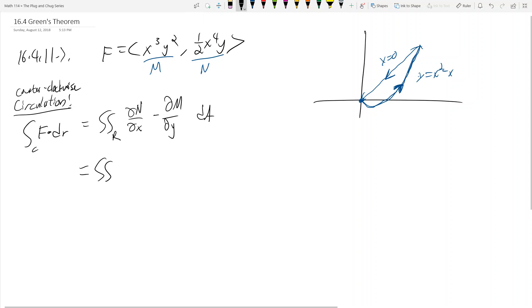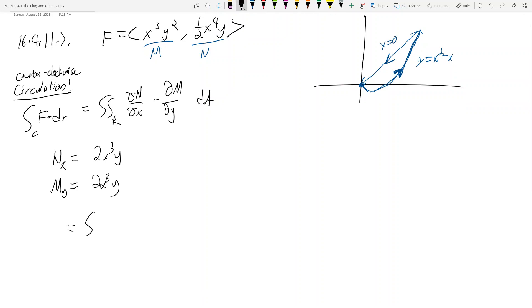So the counterclockwise circulation F dot dr equals this double integral. Let's see it in action for this problem. Now we've got the double integral. Before we do that, what is n sub x? I take one half x⁴y and take the partial with respect to x and I get 2x³y. What is m sub y? I take this guy and take the partial with respect to y and I get 2x³y.